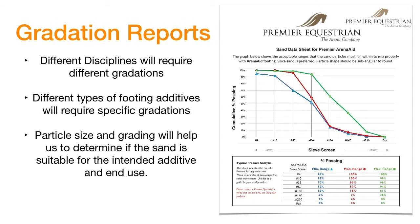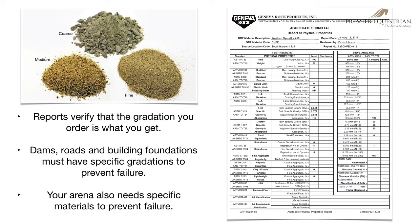Here's an example of a gradation report. Different disciplines will require different gradations, and different types of footing additives will require specific gradations. Particle size and grading help us determine if the sand is suitable for the intended additive and end use. Professional aggregate producers will have reports on their products. We have specific recipes for our footing products, and by using these reports, we can duplicate good footing in all areas of the country. By choosing a pit that maintains reports, you are assured of getting the correct sand. Reports will verify what the gradation is, and if it's a reputable company, it will be within five percent of that report.